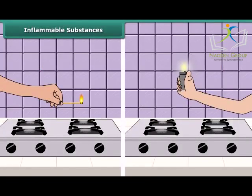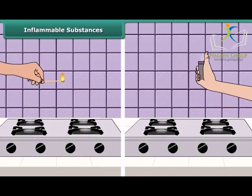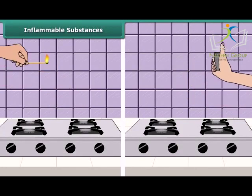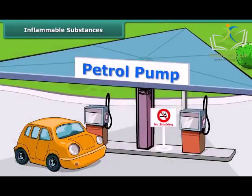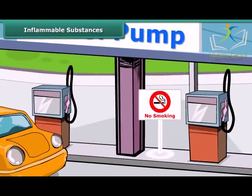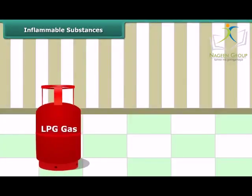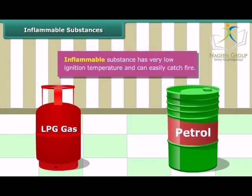Your mother would have told you to keep a burning matchstick or lighter away from the LPG gas stove in the kitchen, because LPG catches fire very easily. Similarly, you must have seen no-smoking signs at petrol pumps — petrol also catches fire very easily, so it is advisable not to smoke there. Substances like LPG and petrol are inflammable because they have a low ignition temperature and readily catch fire.